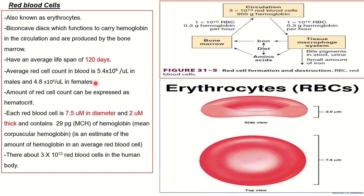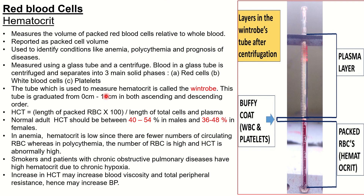The amount of red blood cells can also be expressed as hematocrit. Hematocrit is basically the measure of packed red blood cell volume relative to whole blood.